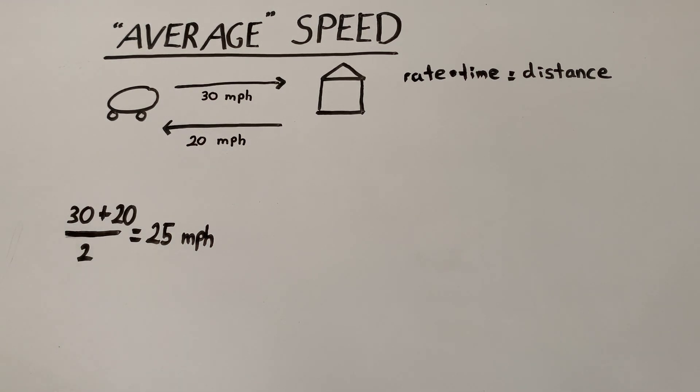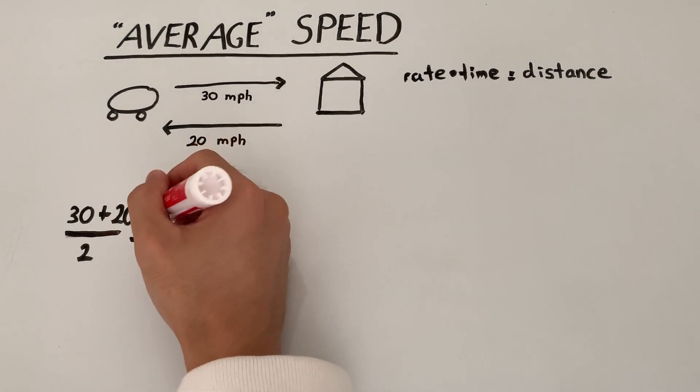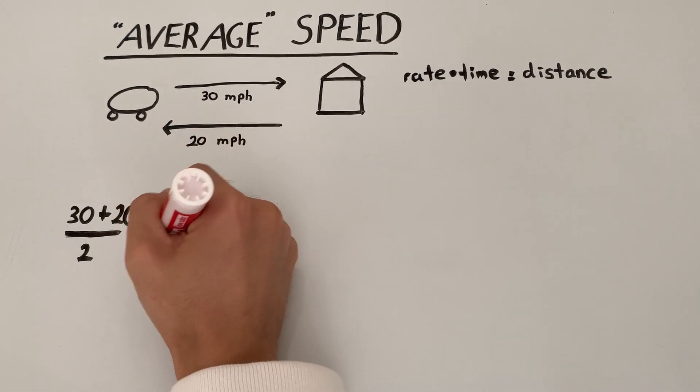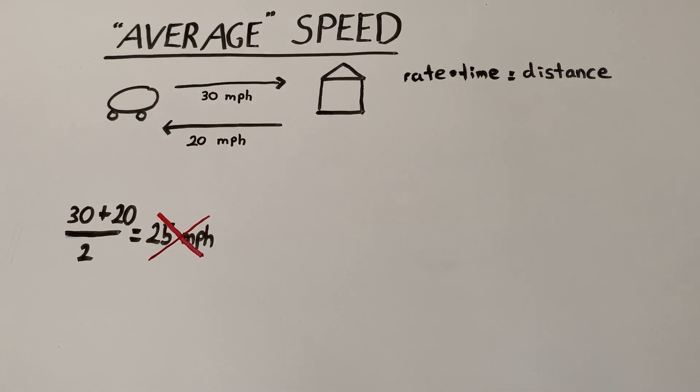The only problem with this is, the answer is actually incorrect. The average speed is not 25 miles per hour. And you're thinking, what? How can that possibly be?